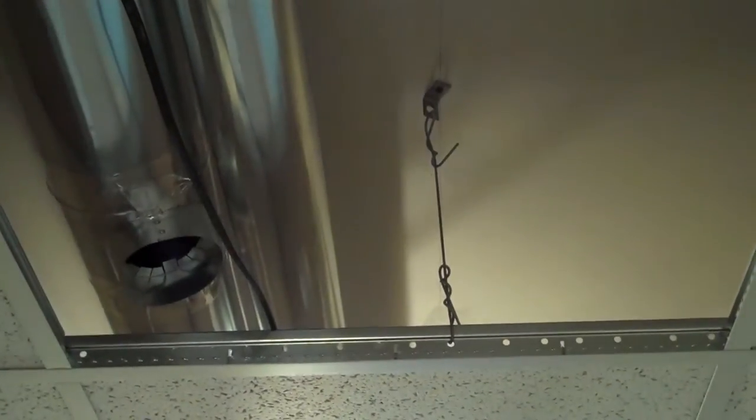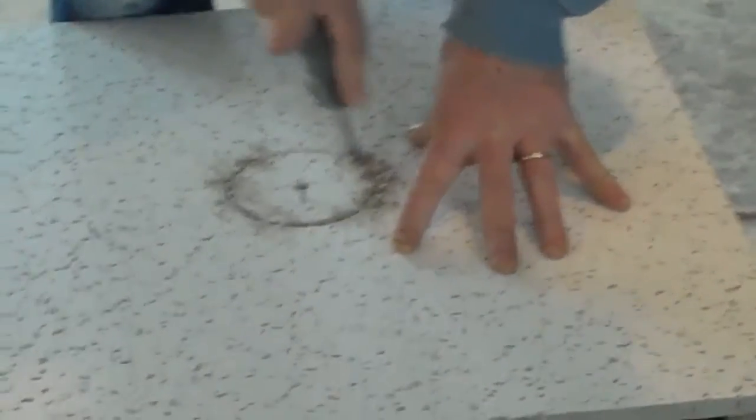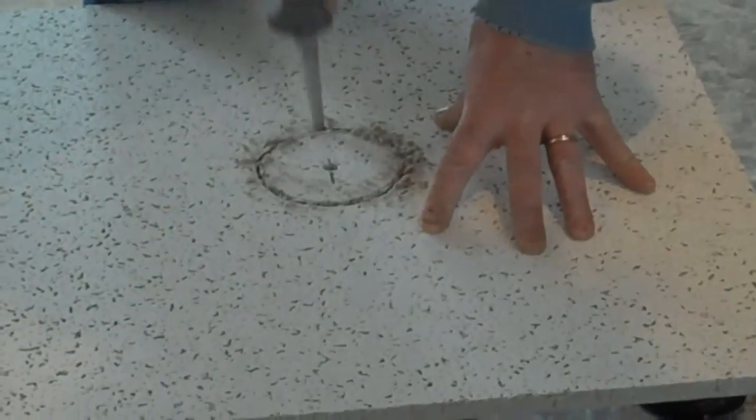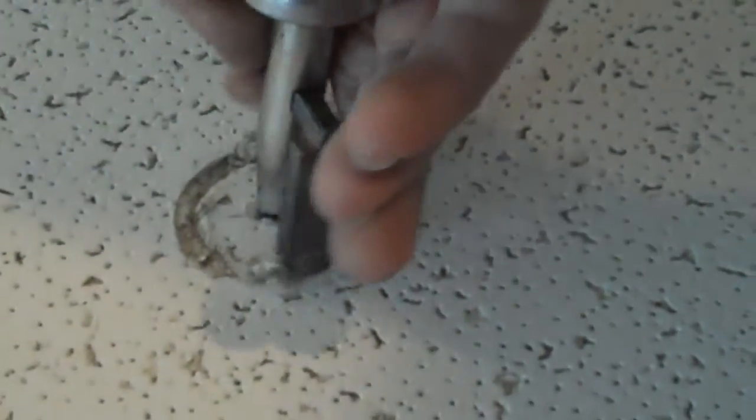A few clamps to the ceiling here, just to give it extra support. It's kind of a bad time to think about it, but we do it all. Setting the hole for the sprinkler in the tile.